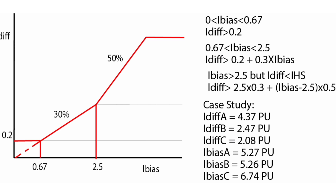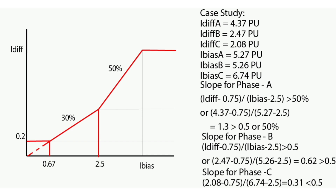For phase A, since the bias currents for phase A, phase B, and phase C are 5.27, 5.26, and 6.74 per unit, we can conclude from the characteristics curve that the bias current falls in the 50% slope region. So the differential current must be greater than 0.75 plus (I_bias minus 2.5) times 0.5 for the relay to remain in the tripping region.